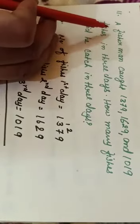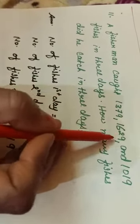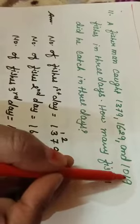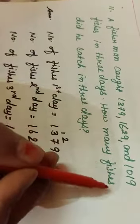Another example. Question number 11 from your book. You see, this question is little different from other question. That's why I am explaining here. A fisherman catch 1379, 1629 and 1019 fishes in 3 days. How many fishes did he catch in 3 days?